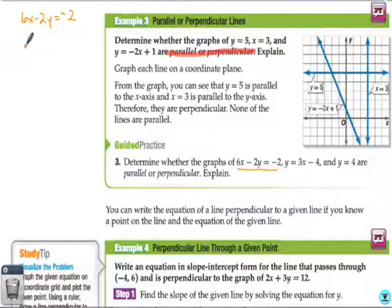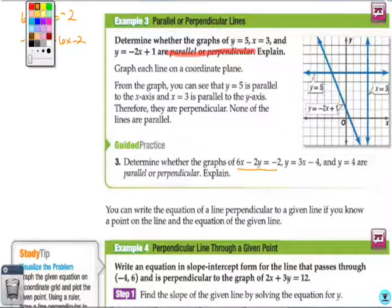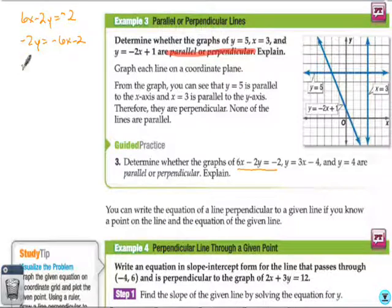First, we're going to subtract 6X from both sides. So, we have negative 2Y equals negative 6X minus 2. Then, we're going to divide everything by negative 2. So, we have Y equals 3X plus 1. Now, we have Y equals 3X minus 4. And, we have Y equals 4.